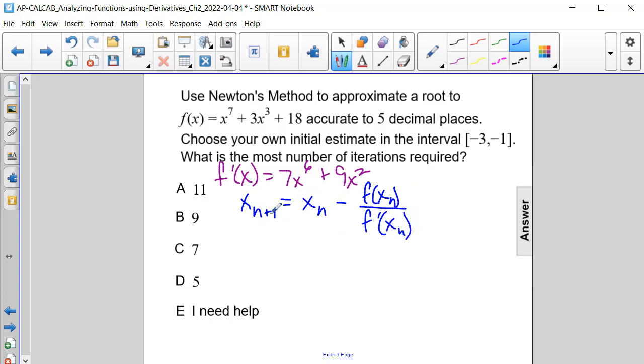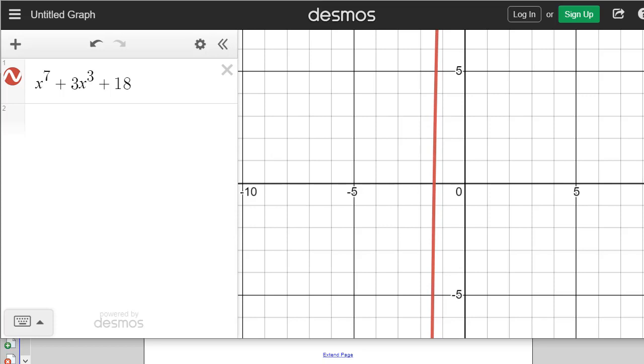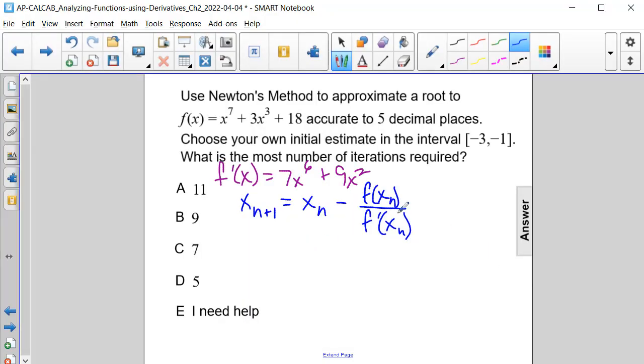So in order to figure out what our first x value will be within this interval, why don't we graph it? So if we graph it, we're approximating our x-intercept. Well, if we graph this function, the x-intercept falls between negative 2 and negative 1. So let's say negative 1 and a half as our initial x value.